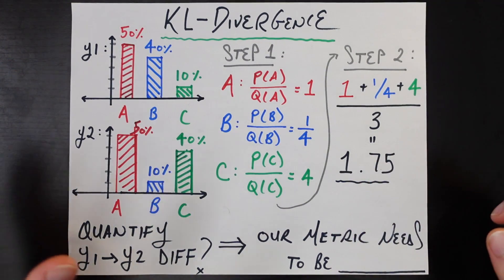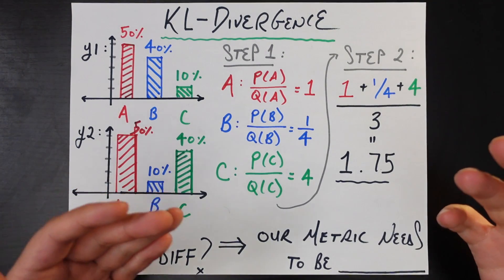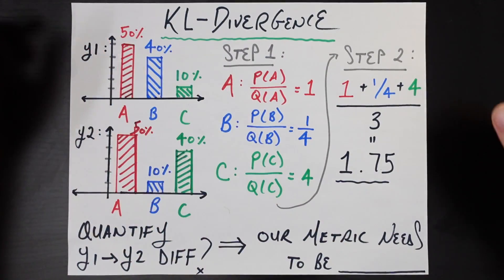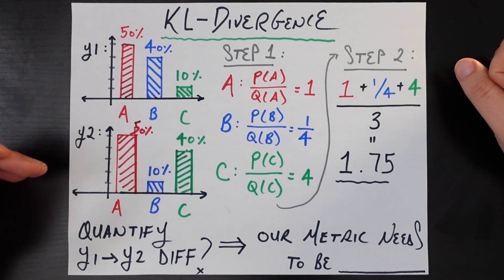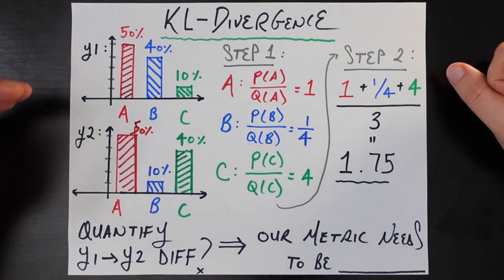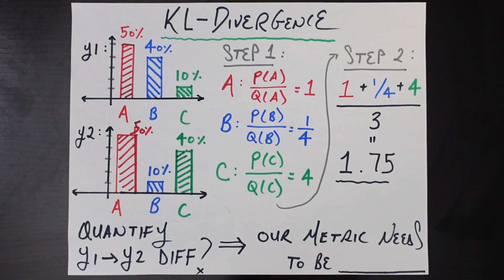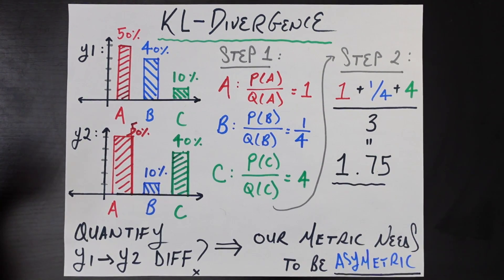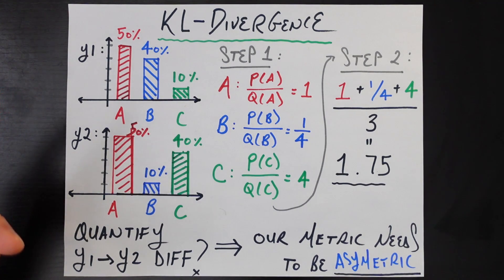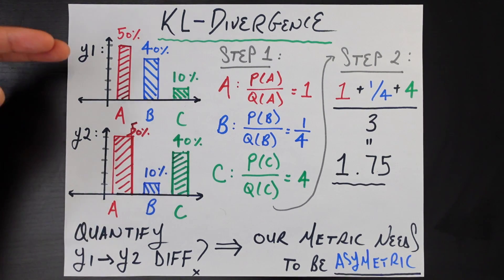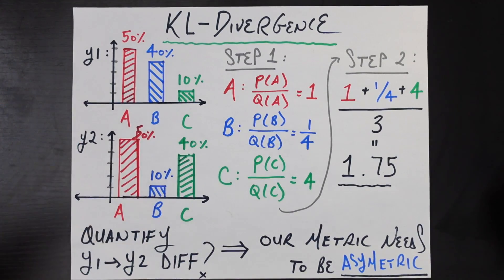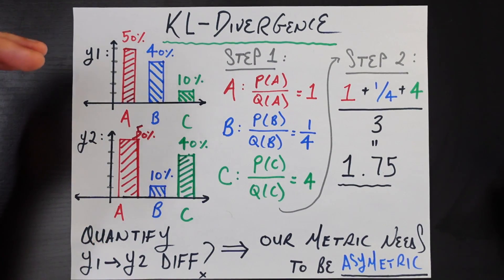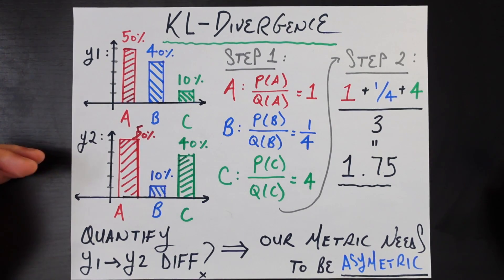Just phrasing it that way, before any math, we already understand a constraint our metric needs to satisfy. We want to know how much the year two distribution is different relative to year one, and therefore whatever metric we come up with needs to be asymmetric. Asymmetry means that if you switch the two things you're comparing, the answer should change. If you ask how different year one is relative to year two, you'd expect a different number, because the reference point is different.